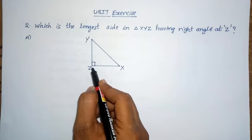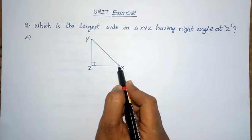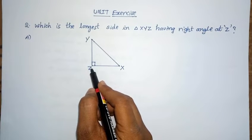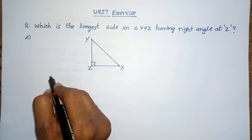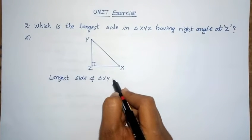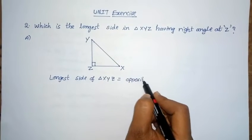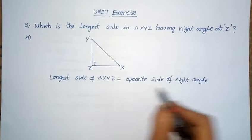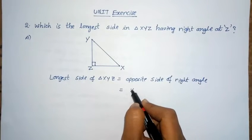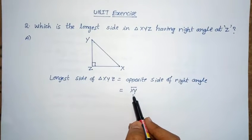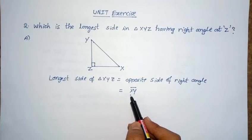In this triangle, the angle Z opposite side is the side XY, so Z's opposite side is the largest side. The longest side of triangle XYZ is equal to the opposite side of the right angle, that is side XY. So XY is the longest side in triangle XYZ.